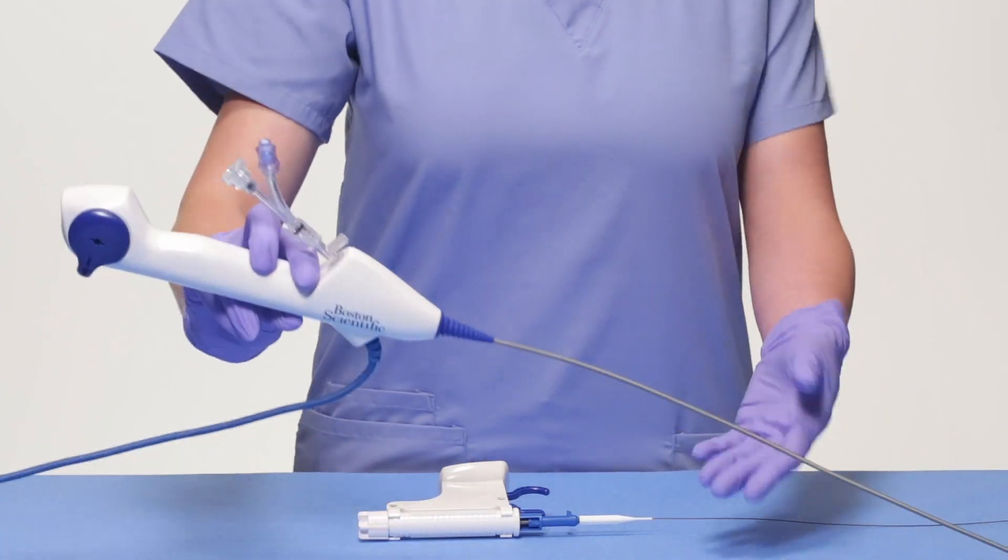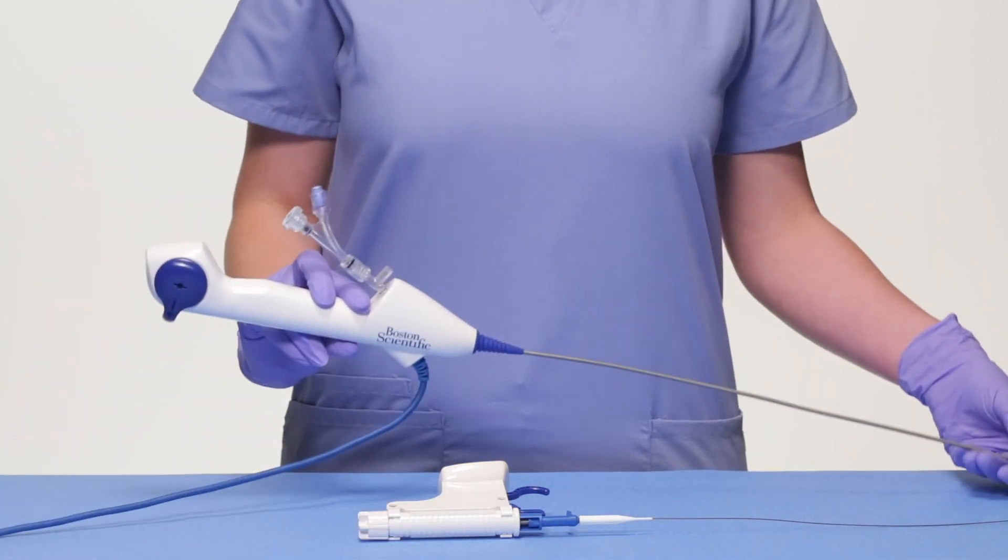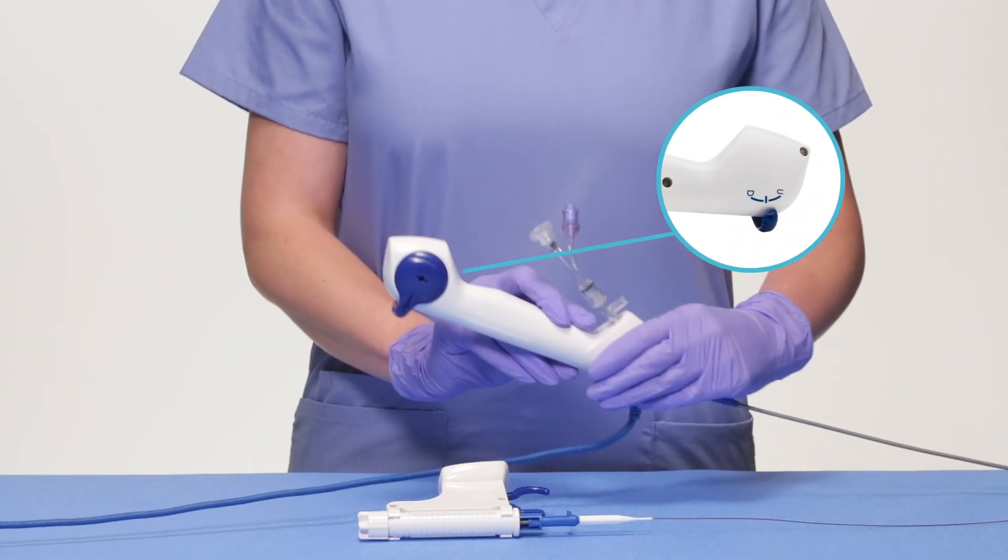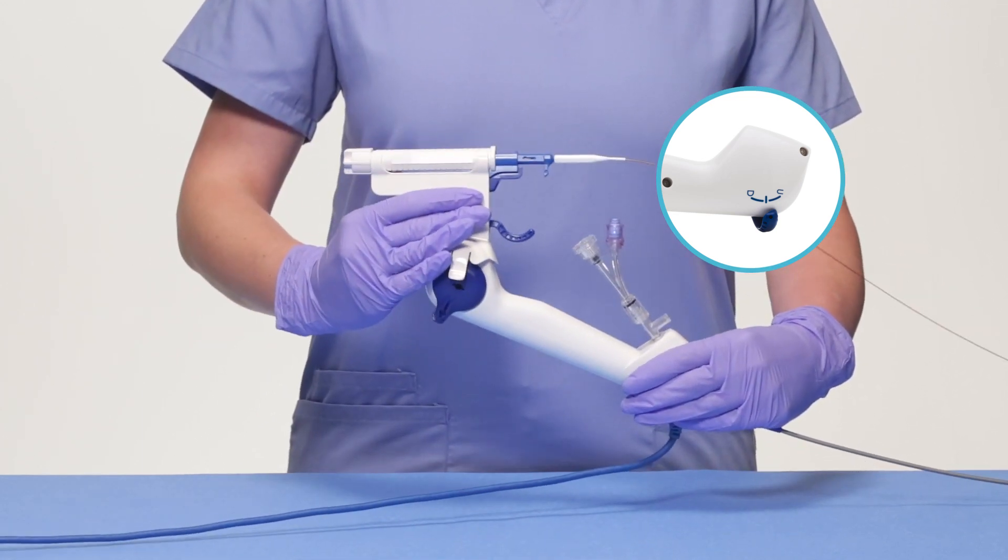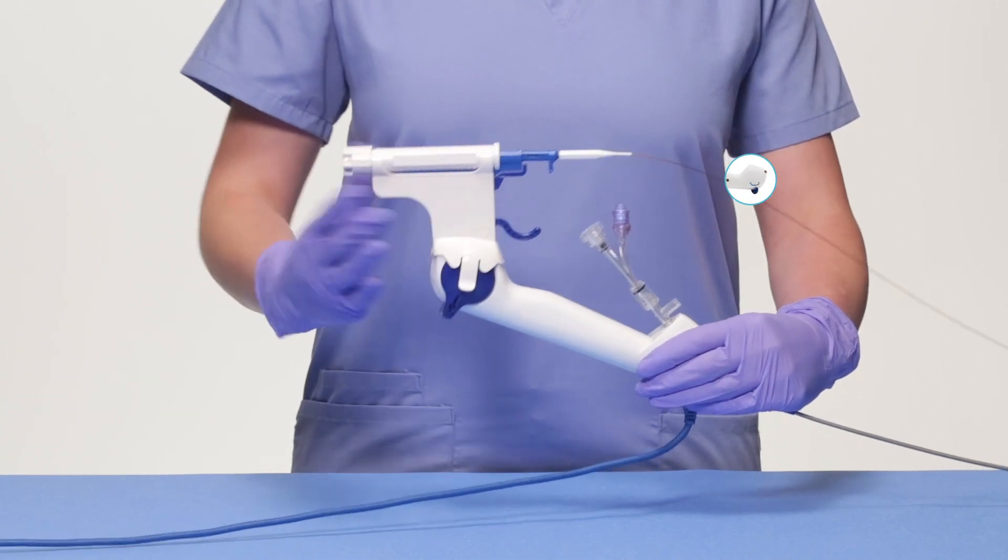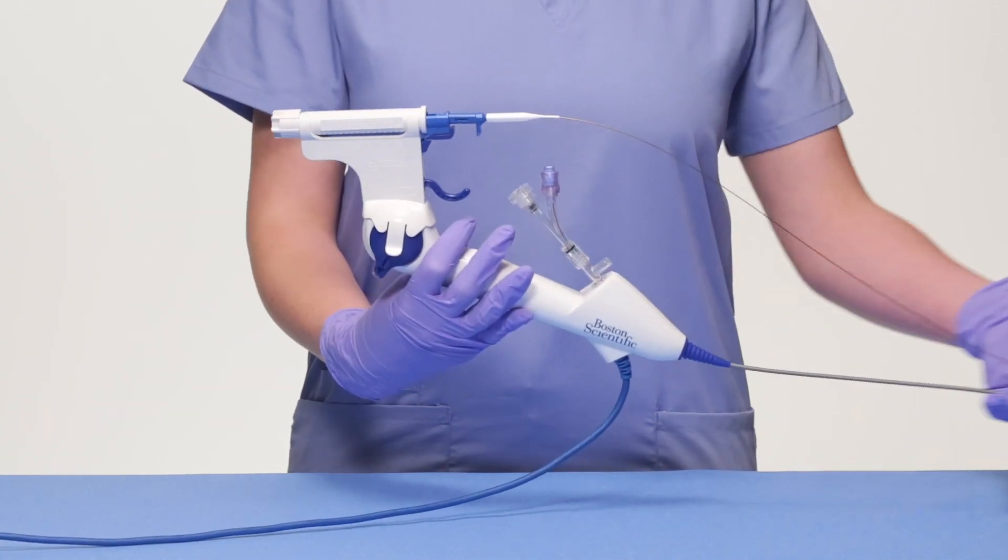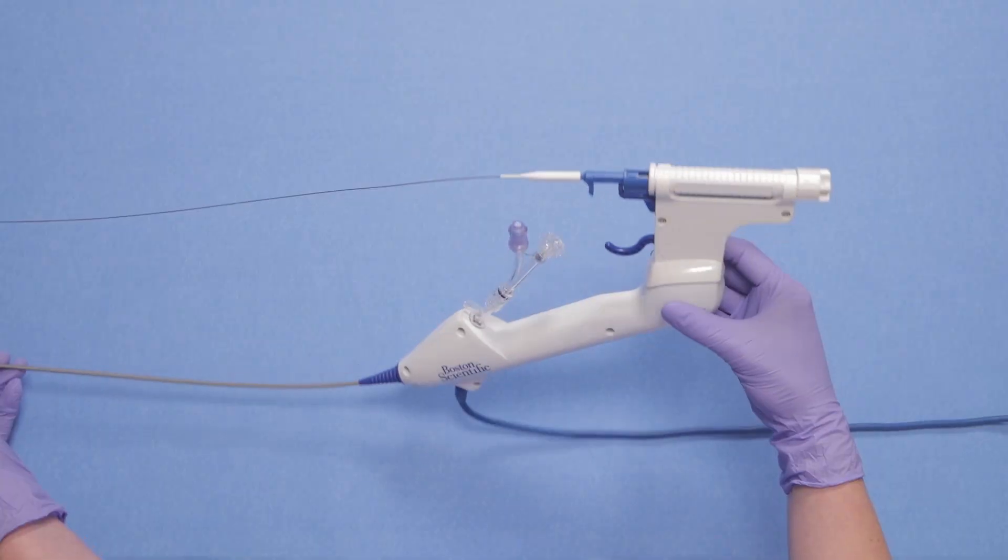To connect the Lithaview Empower Device to the Lithaview Ureteroscope, you must first align the pin with the DU markers on the ureteroscope. This side must be attached first for the device to function properly. When aligned correctly, pressing down will snap the device into place.